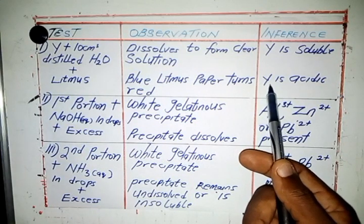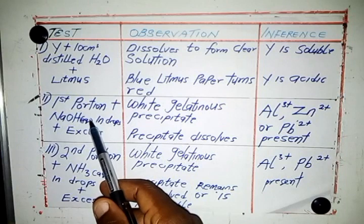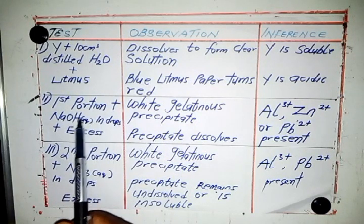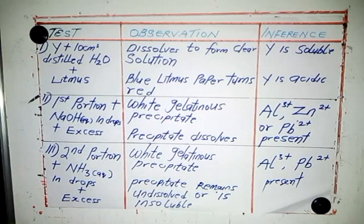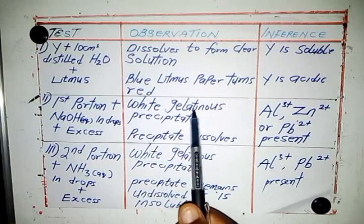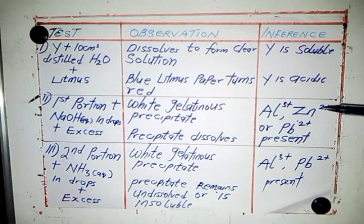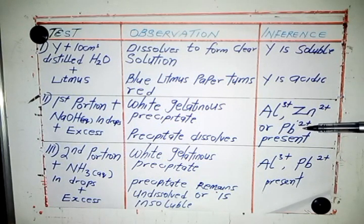For the second test, you divide it into two or three portions. First portion plus sodium hydroxide in drops, then in excess. The observation is that you get a white gelatinous precipitate, and in excess the precipitate dissolves — so it is soluble in excess NaOH. The inference would be aluminium ions, zinc ions, or lead ions present.